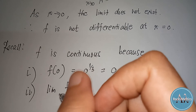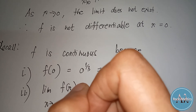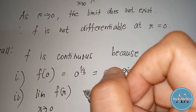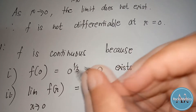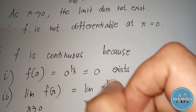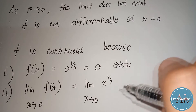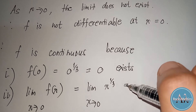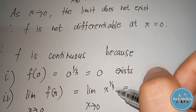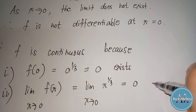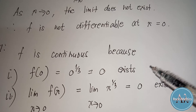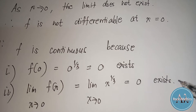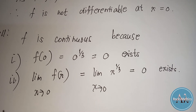Second condition: the limit of f(x) as x approaches a, which is zero. The limit of x raised to one-third as x approaches zero — substituting zero, we get 0 raised to one-third = 0, and it exists. So the first and second conditions are both satisfied.